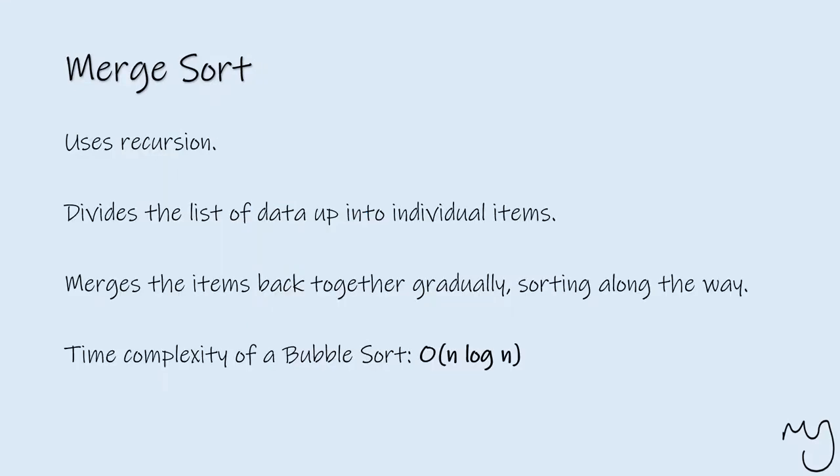The merge sort, and again this is going to reference the use of the term recursion which we've spoken about already, makes use of that as well. Recursion is essentially a routine that makes some sort of reference to itself, calls itself within its own setup. And the merge sort works by dividing the list up into individual data items initially. So it looks at the list of data and scatters this across separate values.